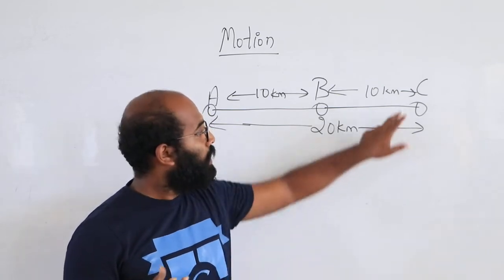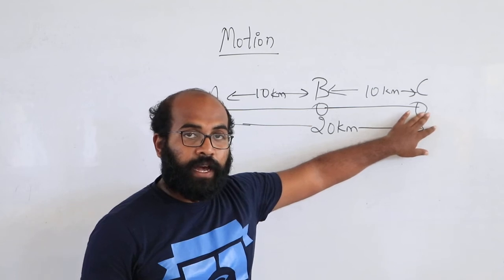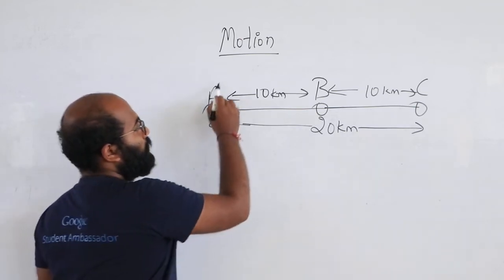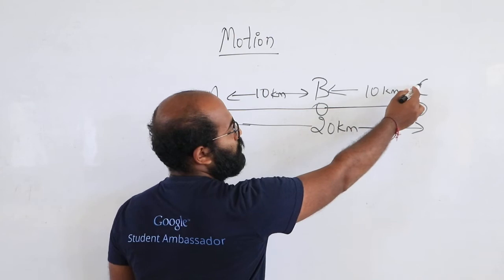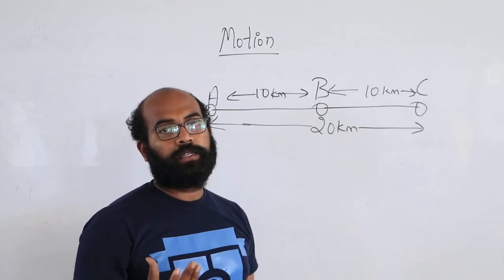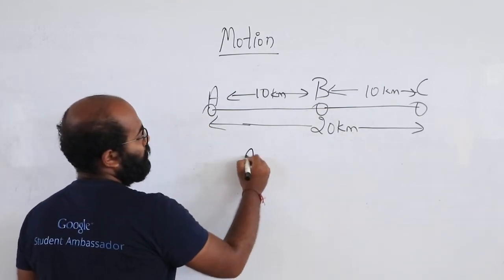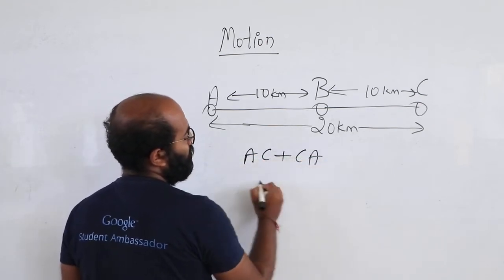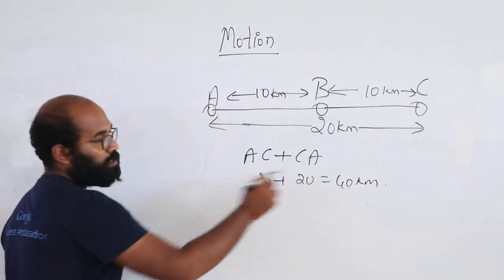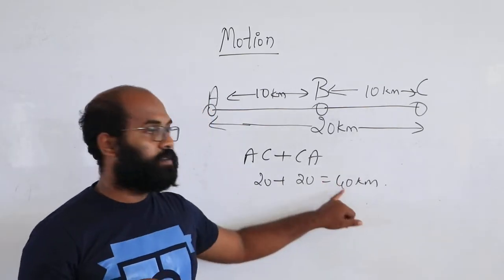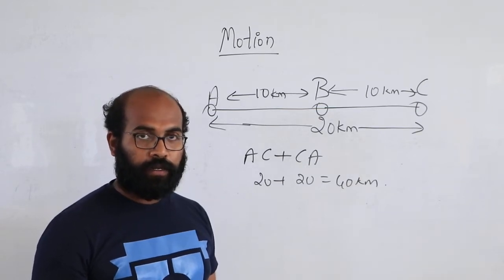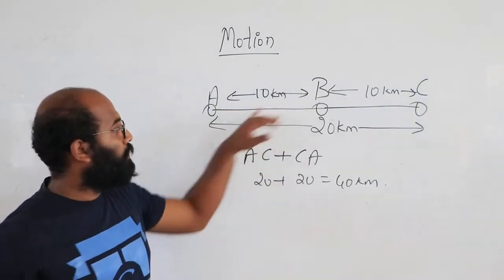When I say that from C I come back to A, the total distance would be from A to C and back. Traveling from A to C is 20 kilometers, and then I come back to A, so the total distance will be 40 kilometers.